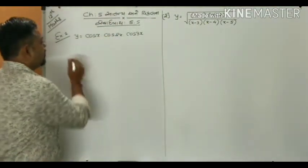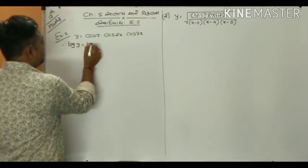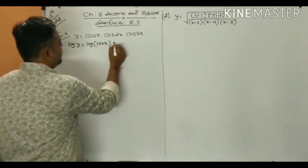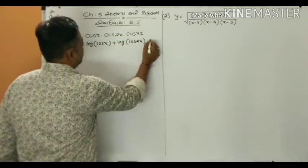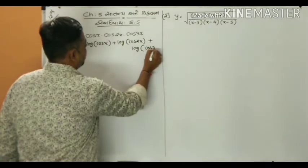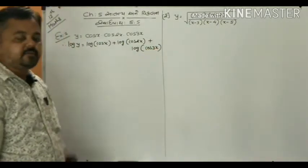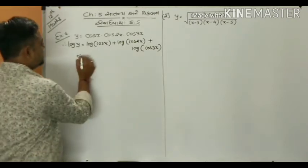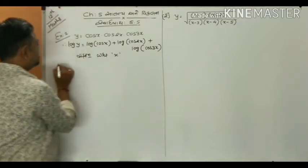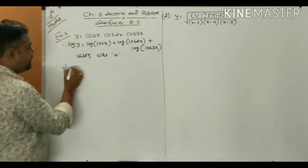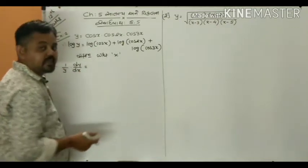Taking log on both sides: log y = log(cos x) + log(cos 2x) + log(cos 3x). So the function is now converted into addition form. The next step is differentiation with respect to x. Differentiating log y gives (1/y) · dy/dx.